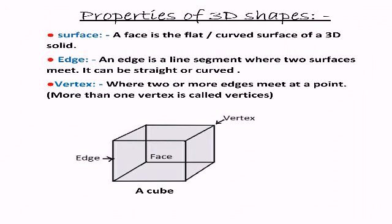Surface — what is a surface? A face can be of 2 types: flat surface or curved surface of a 3D solid. Edges — what is an edge? An edge means a line segment where two surfaces meet. That is called an edge. It can be straight or curved. Vertex — what is a vertex? Where two or more edges meet at a point, that is called a vertex. More than one vertex is called vertices — that is the plural form of vertex. Here I have given one image of a cube showing the vertex, the face, and the edge.